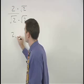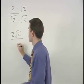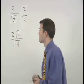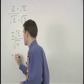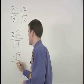So we have 2 root 2 over root 4 which simplifies to 2 root 2 over 2.